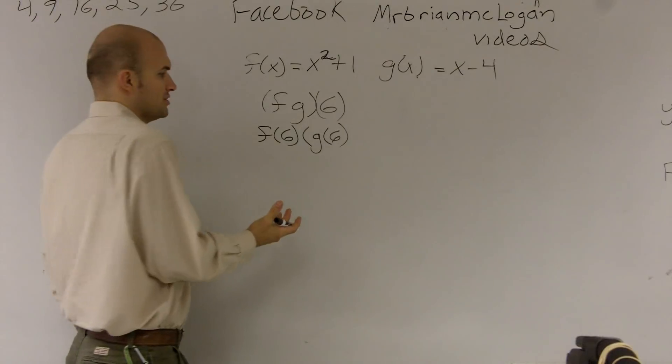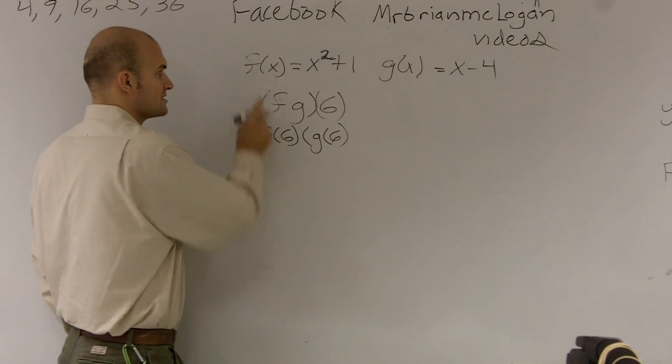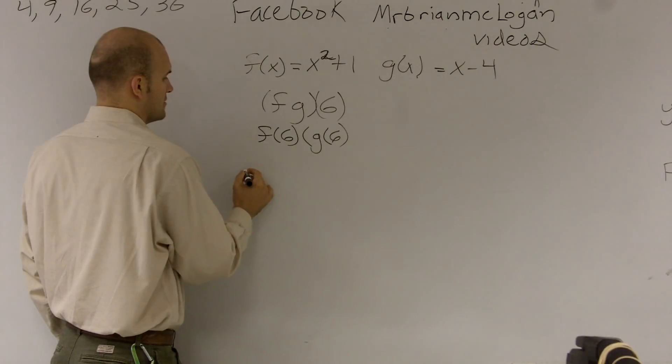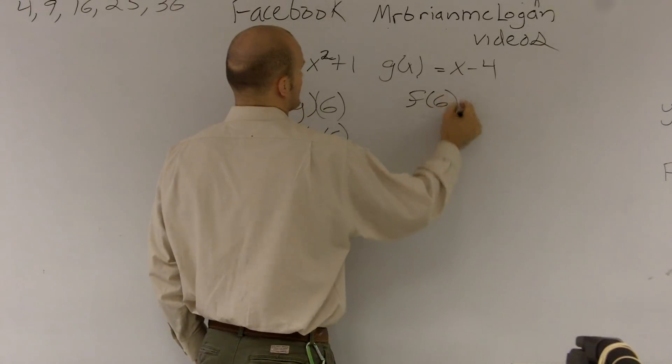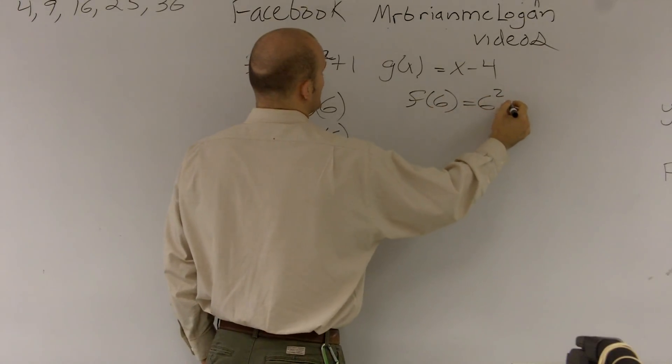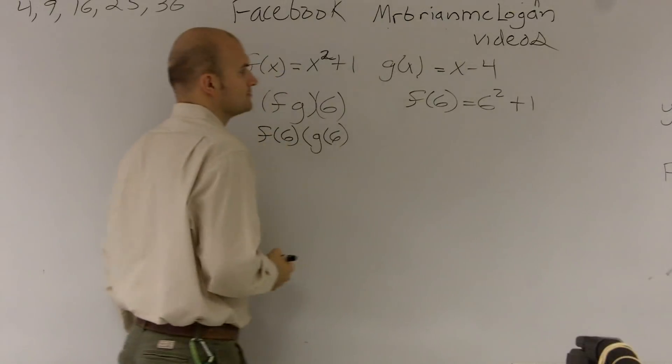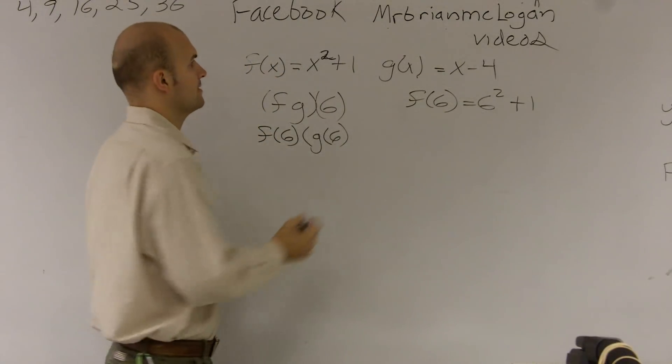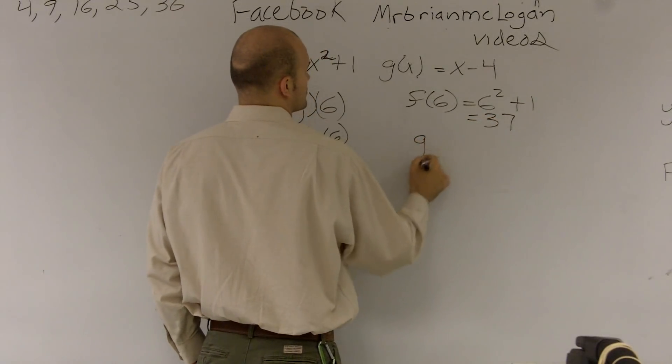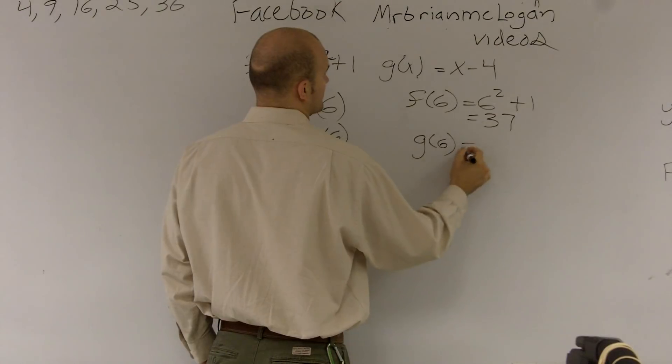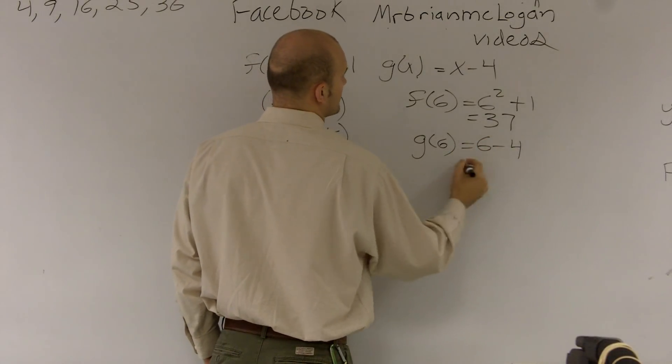All right? So the first thing you guys can do is you could just say, well, what is f of 6? Well, f of 6 is, let's just figure out what they are. f of 6 is equal to 6 squared plus 1, which equals 37. And g of 6 can be 6 minus 4, which is equal to 2.